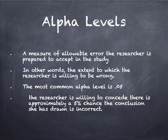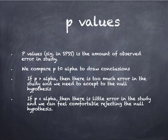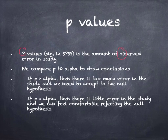They're going to take tables and compare them to p-values. P-values, which are reported as SIG in SPSS, are the amount of observed error. As a mnemonic, I take that P and relate it to the O — it's nice and close to the O. So a p-value is observed error, where alpha is allowable error. We compare the p to alpha to draw conclusions.